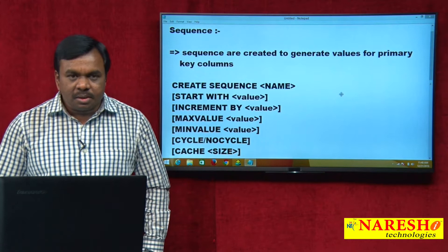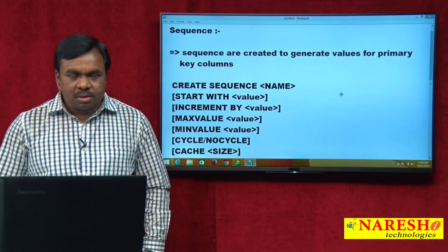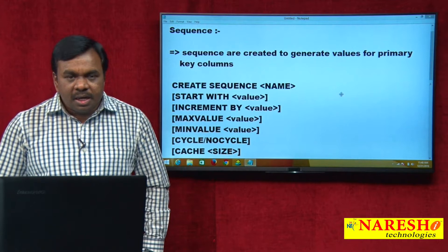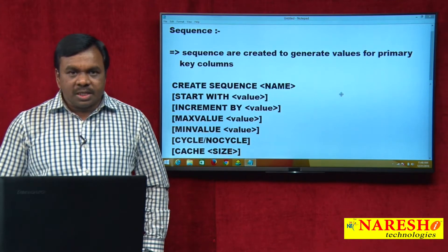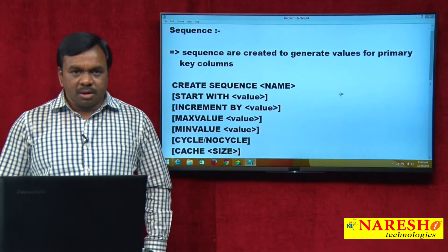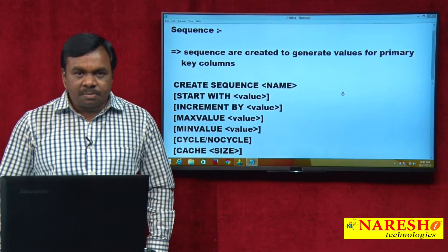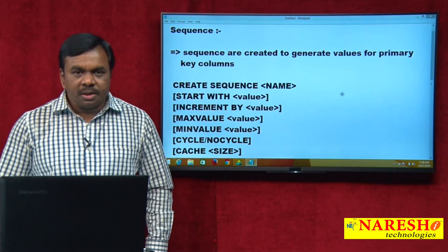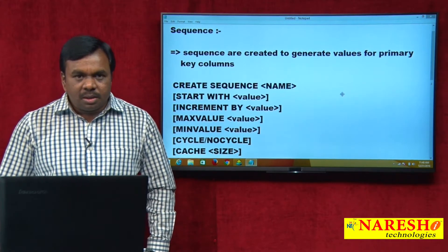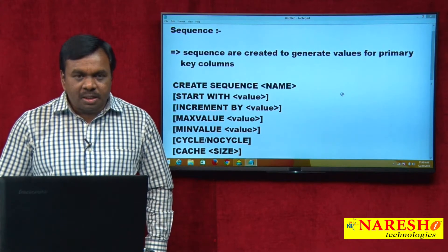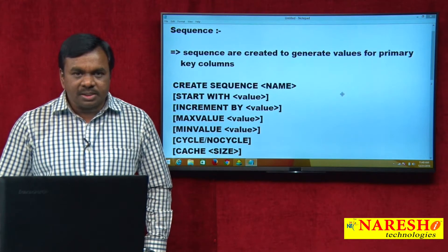A sequence is a database object — an Oracle object — mainly created to generate values for primary key columns. The purpose of this object is to generate values for primary key columns. For some primary key columns we cannot input the values manually; the values must be automatically generated.